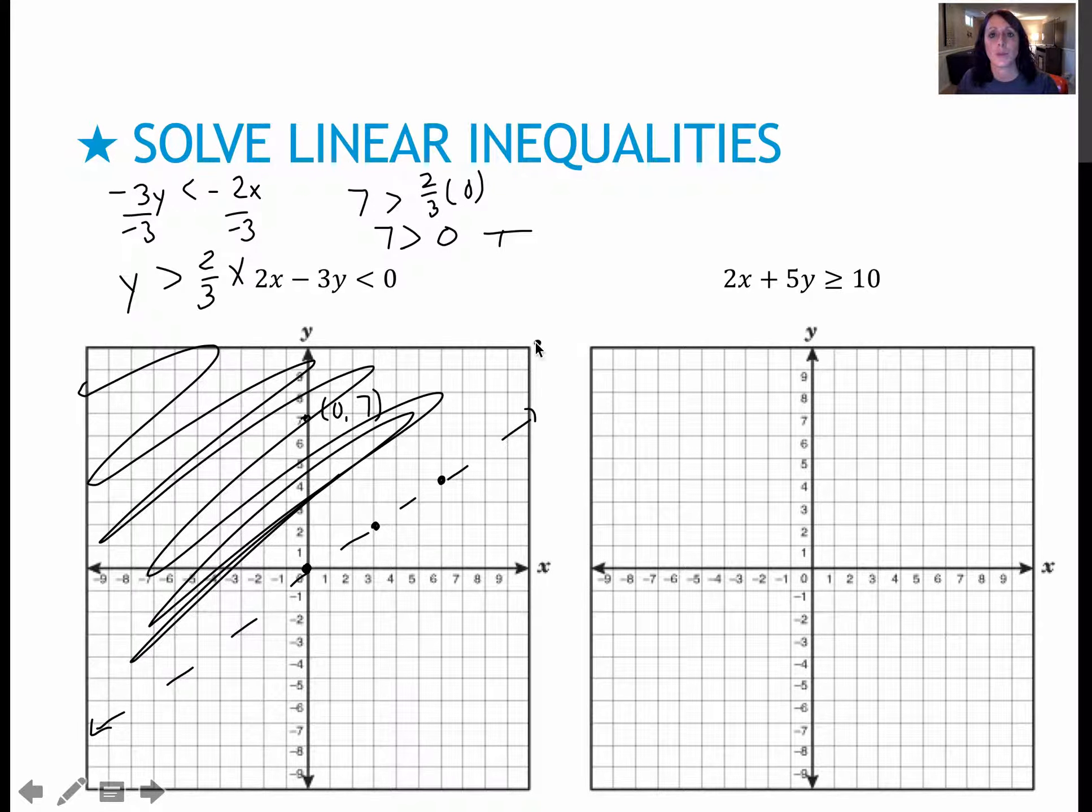So 7 is greater than 0 means I'm going to shade towards my test point. If it's false, you shade away. I could have also plugged it into this original equation, which would be 2 times 0 or 0, minus 3 times 7 is less than 0, which gives me negative 21 is less than 0, which is still true.